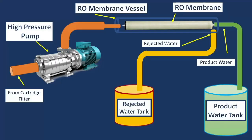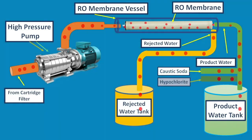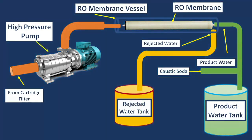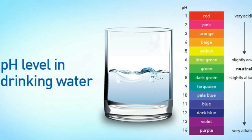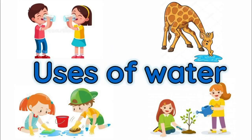Number 5 is Caustic Soda or Lime. Caustic soda or lime is used in post-treatment — that is, after the product or permeate water exits — to increase the pH of the water. The target pH can be 7 or higher, depending on the intended use of the water.